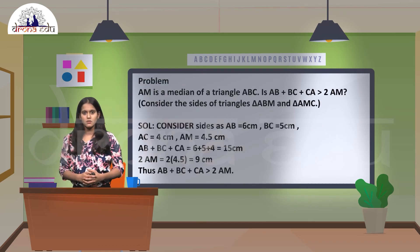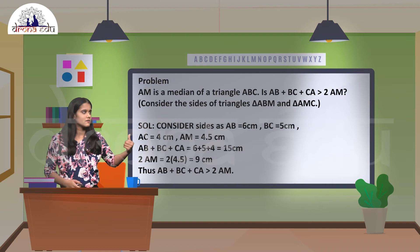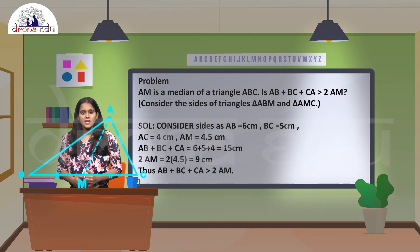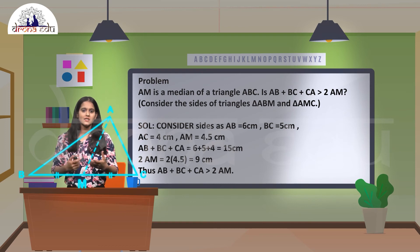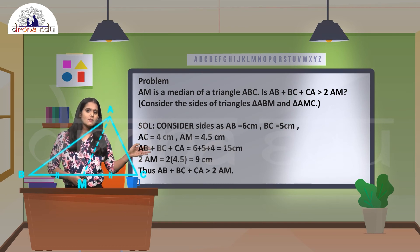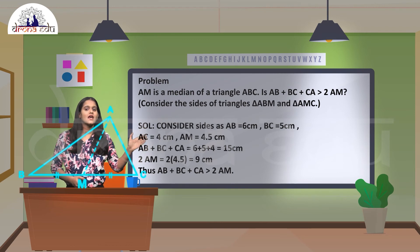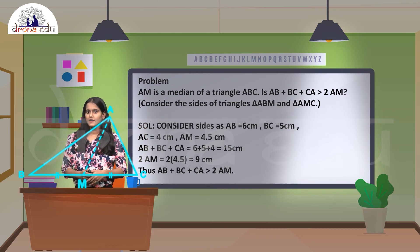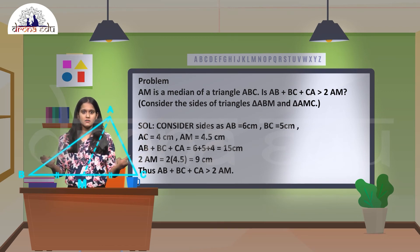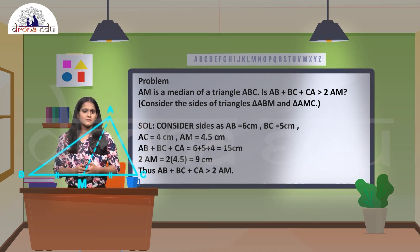Next, let's solve one more problem where the statement is given like this: AM is a median of triangle ABC. They're asking whether AB + BC + CA is greater than 2AM. If you consider these two triangles: triangle ABM and triangle AMC.